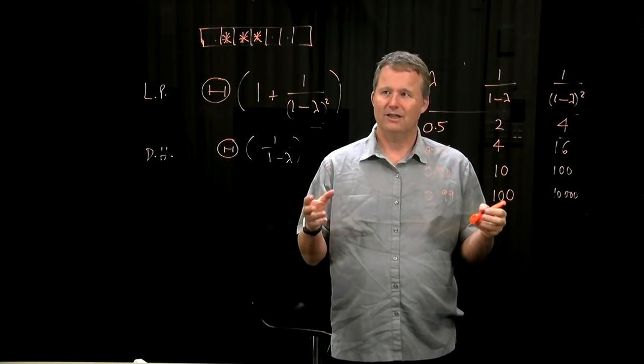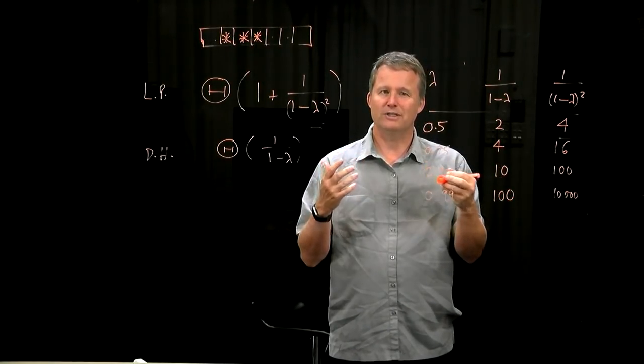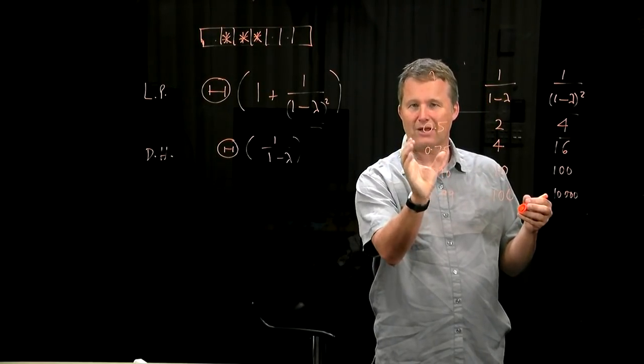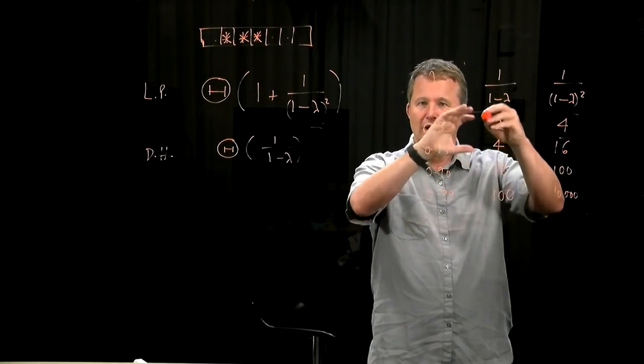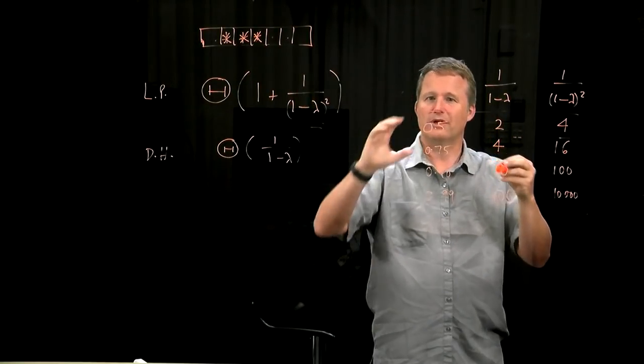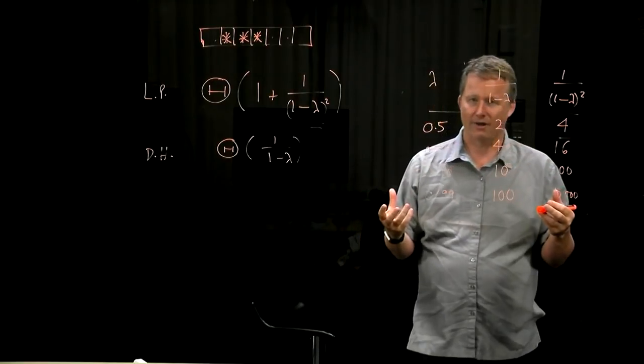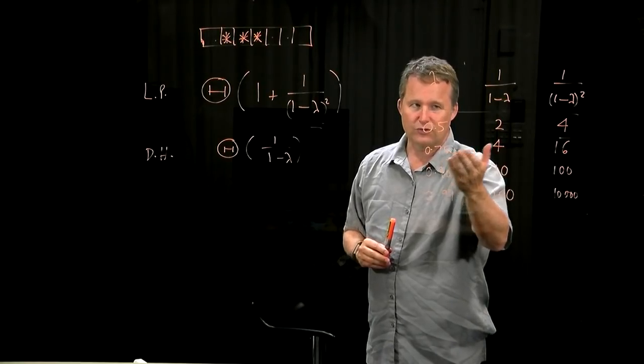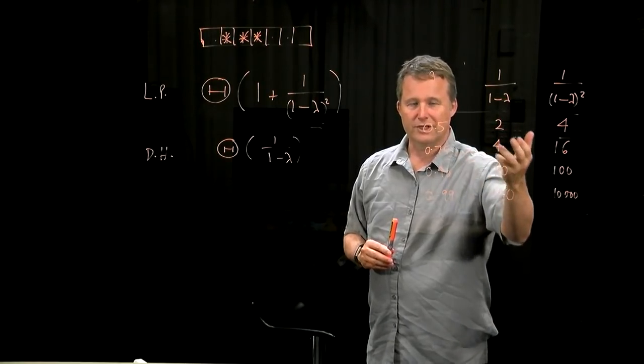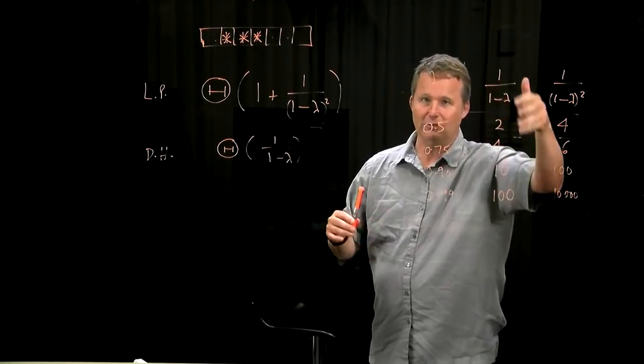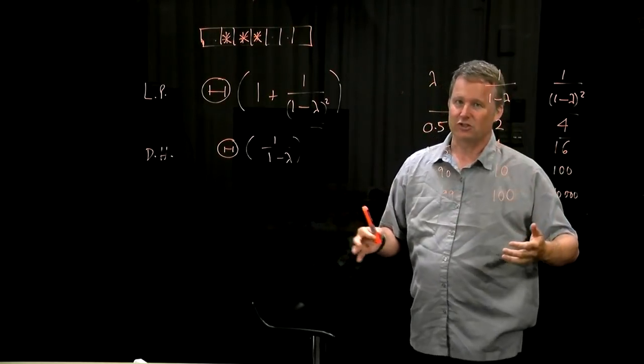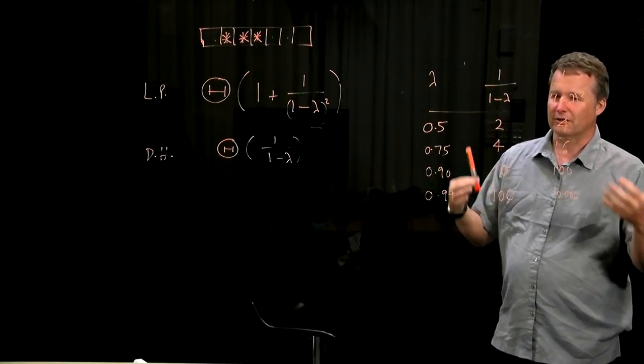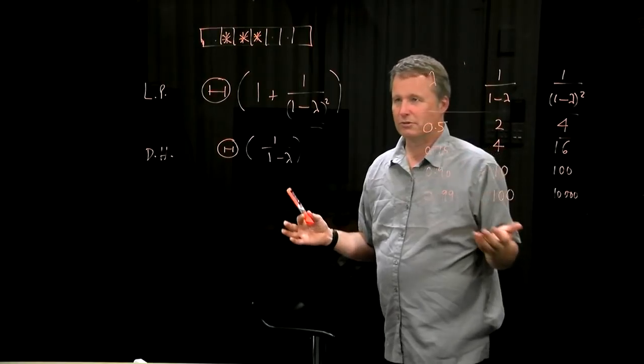So again, as with chaining, for open addressing the key point is that as long as the load factor is under control and not too big, bounded, the total runtime for basic operations will be order 1, will be constant time. If you're never more than 3 quarters full, you'll never take more than some constant times 4 probes on average to find things. Just remembering that, of course, the worst case things could be very bad.